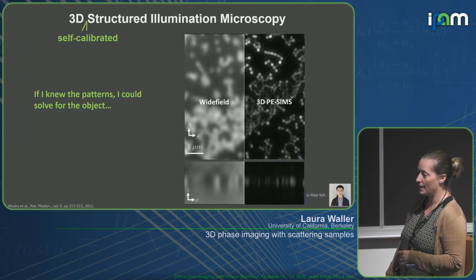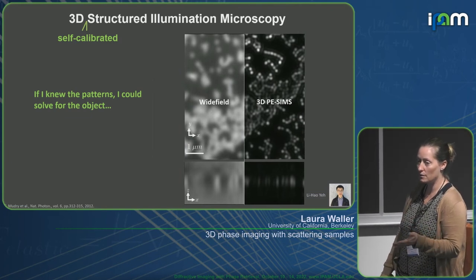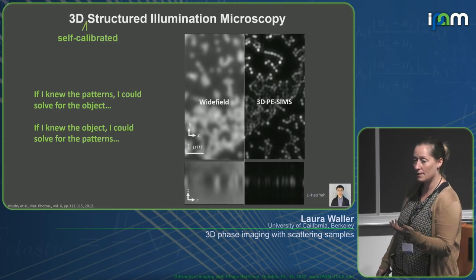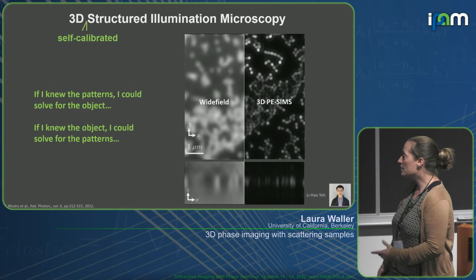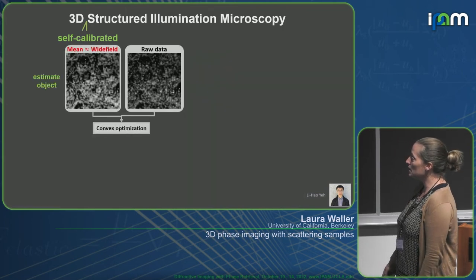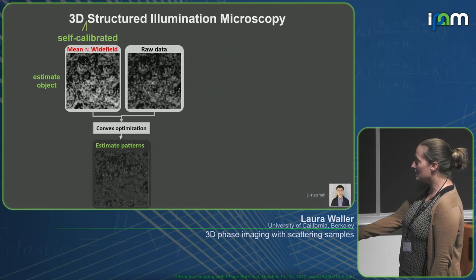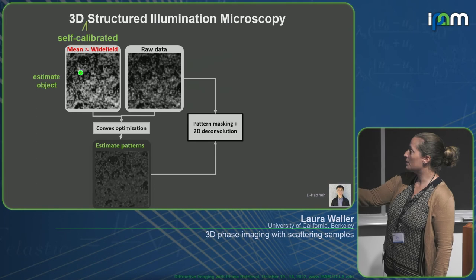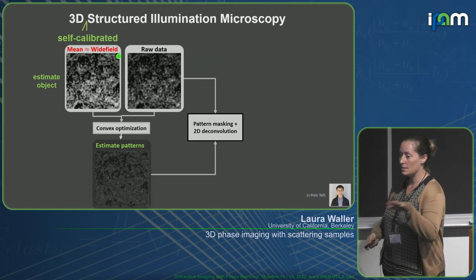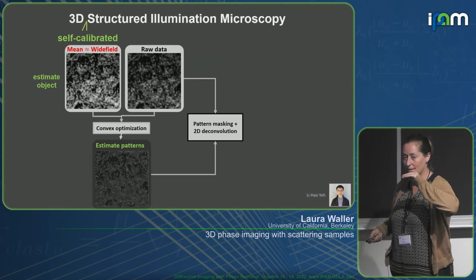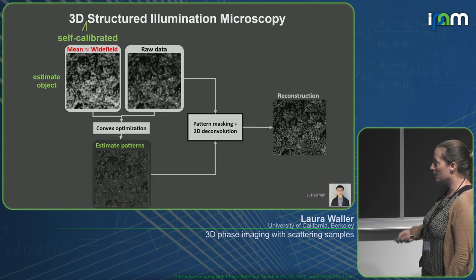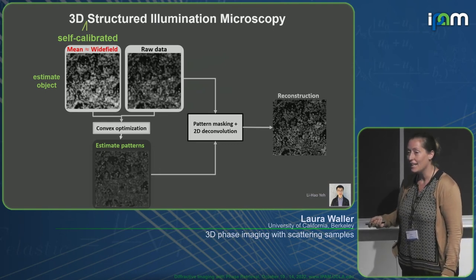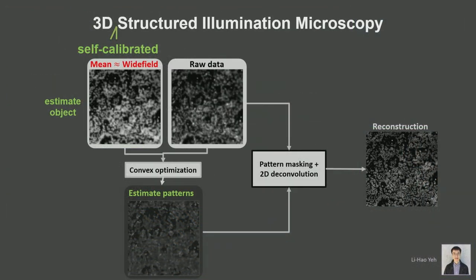This is self-calibrated in the same way: if I knew the illumination patterns I could solve speckle structured illumination easily; if I knew the object I could solve for the patterns. So it's the same joint optimization idea. We estimate the illumination patterns with some blank spaces where we can't always estimate them. An important statistical assumption: the mean of all speckle patterns is flat, so you need many speckle patterns for this to be accurate. That's the Achilles heel — it takes a long time to capture enough images to flatten the mean.